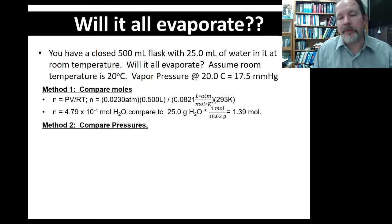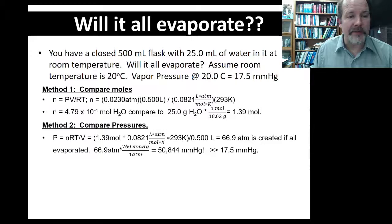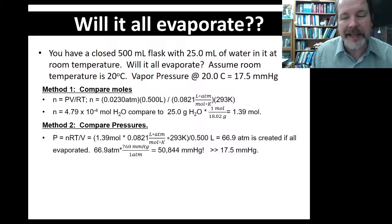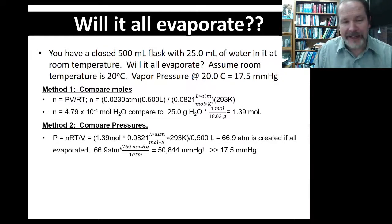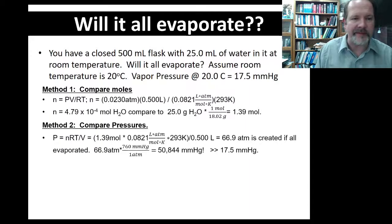Method 2 is to compare pressure. How much pressure is generated if it all evaporated? Use the ideal gas law again and solve for pressure. I put in 1.39 moles of water — that's how many are in 25 milliliters — multiply by R times T, divide by the volume. If it all evaporated, 66.9 atmospheres of pressure would be created. That's a lot — not going to happen. Very little will evaporate because it stops at 17.5 millimeters of mercury. You're generating roughly 50,000 millimeters of mercury of pressure versus the allowed 17.5 — so no, it won't all evaporate.